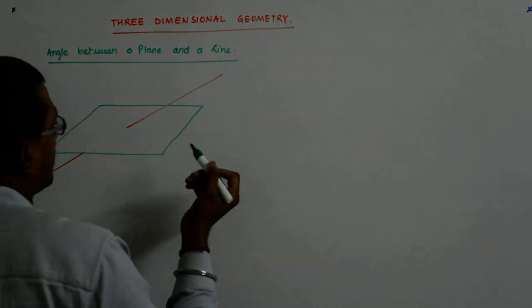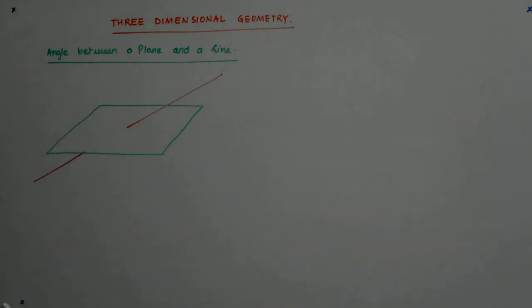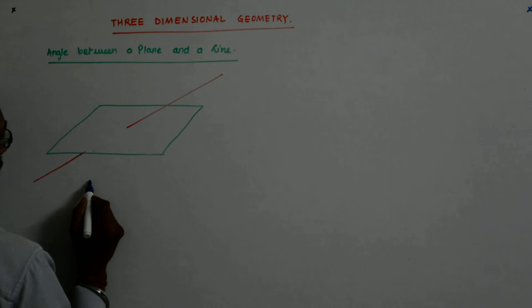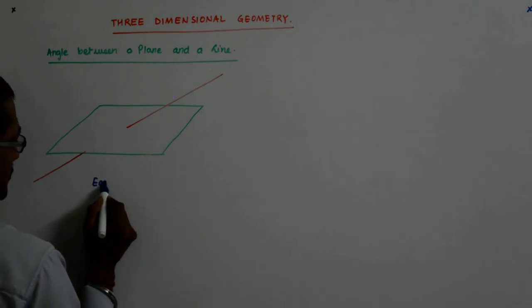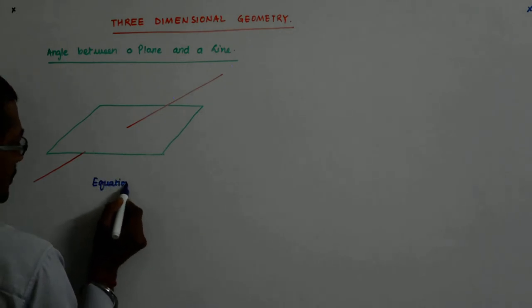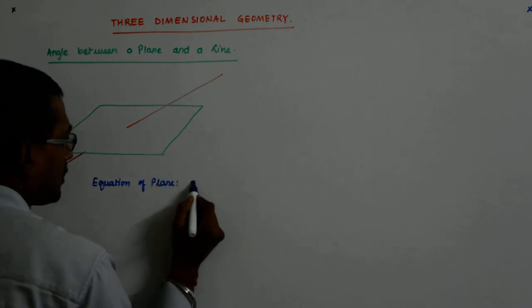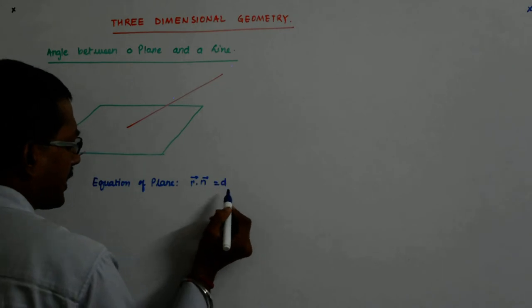Now, my equation of plane is r dot n is equal to d. So, equation of plane is what? r dot n is equal to d.